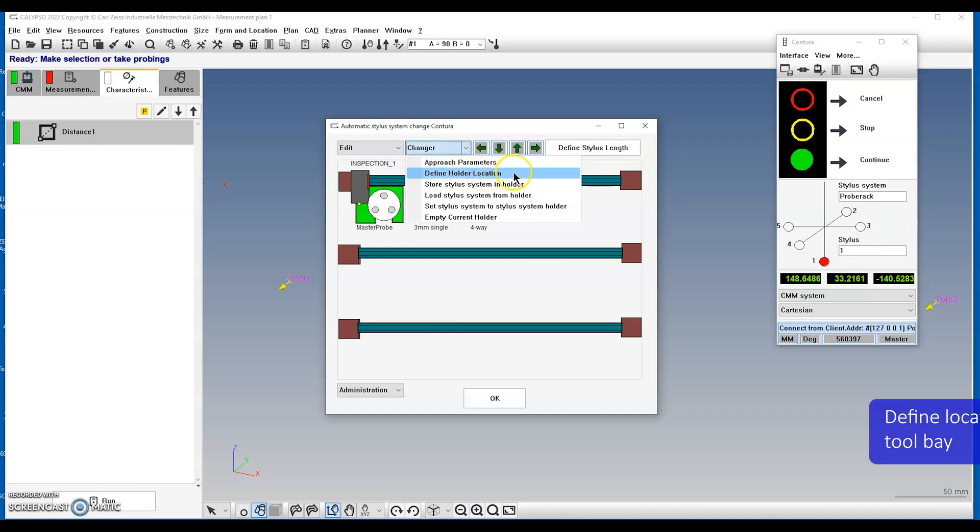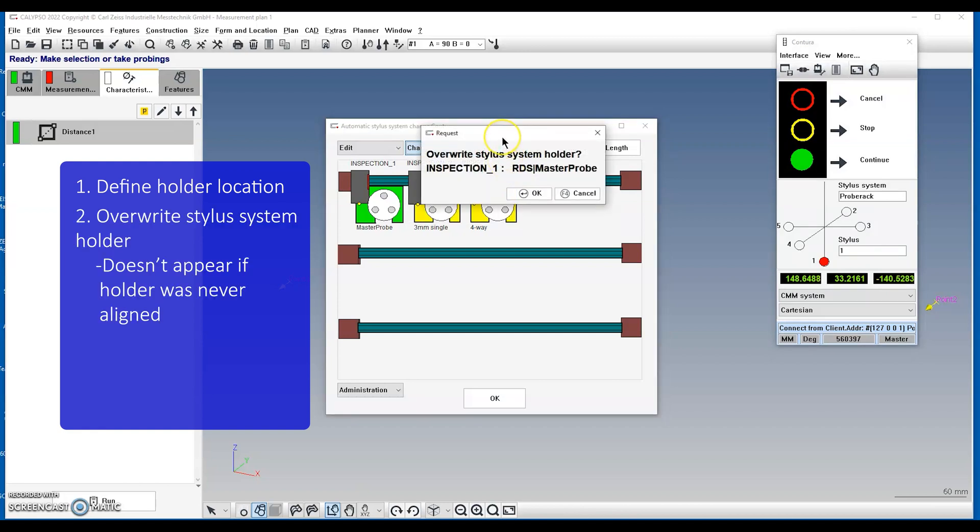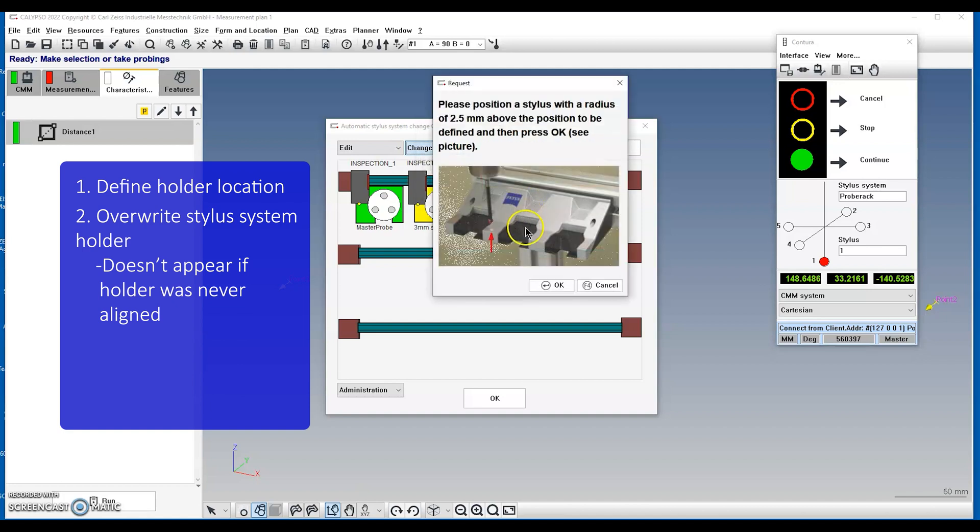Next, we're going to define the location of the tool bay or tool holder. To do this, click on define holder location. A window will appear to overwrite the stylus system holder. This window does not appear if the holder was never aligned. If you don't have a holder, it will add this to your screen. Click OK.